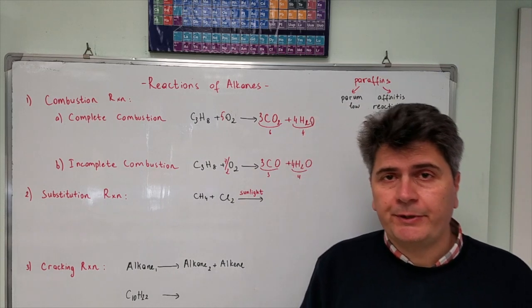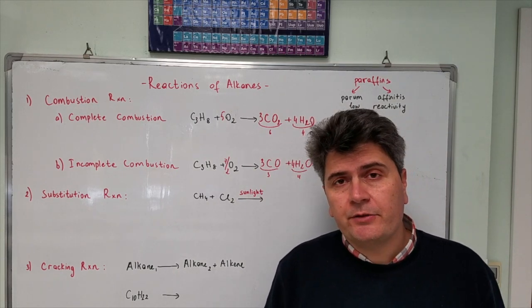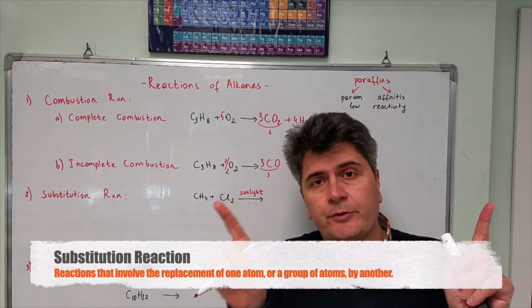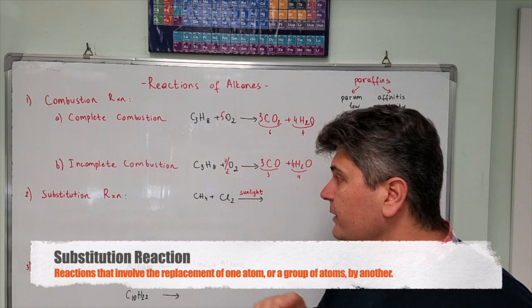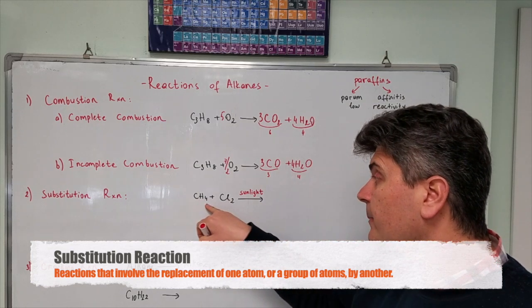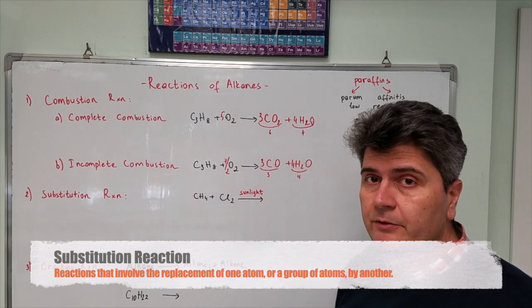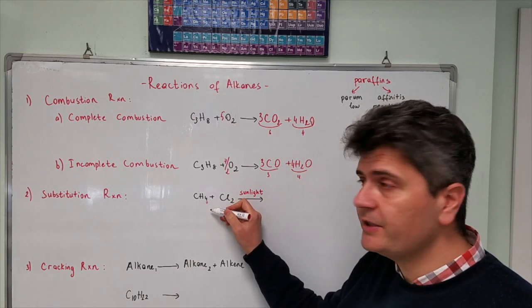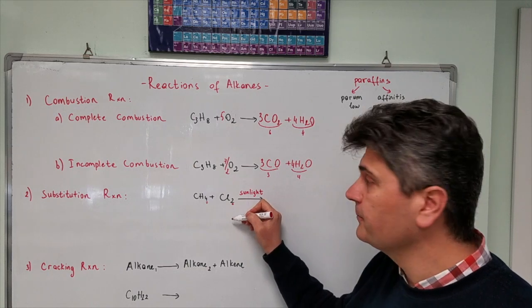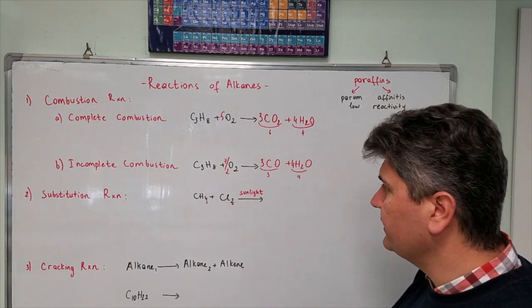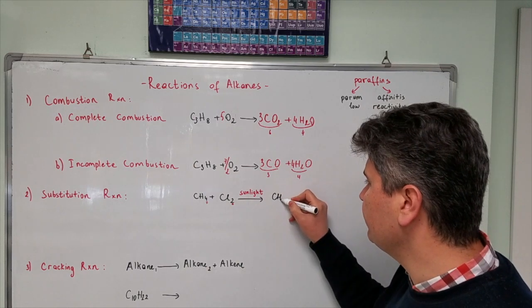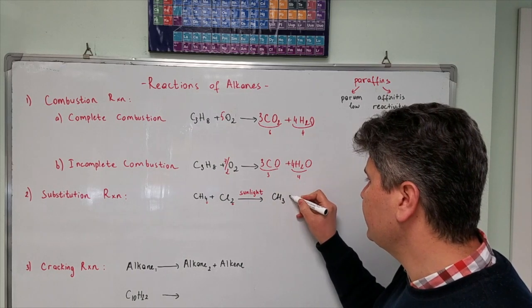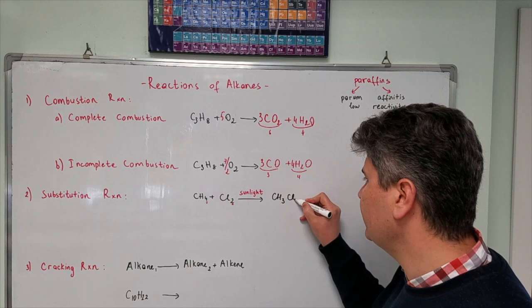If you remember from the previous videos, substitution reactions were reactions where we change the places of atoms or groups of atoms. Now, in this reaction, we have methane molecule reacting with chlorine. In this reaction, one of these hydrogens will be changing its place with one of these chlorines. It's going to give us CH3. It was four, one is gone, so CH3. What came to the place of that? A chlorine atom.